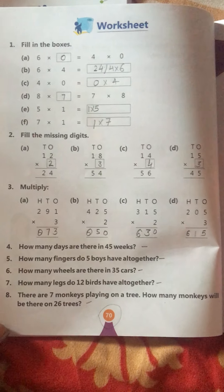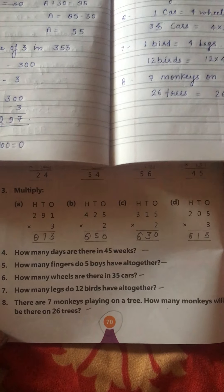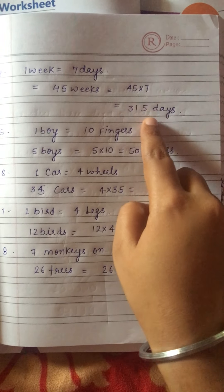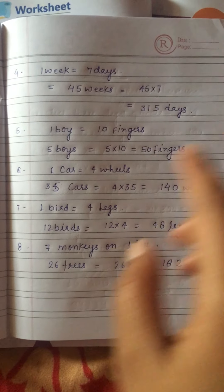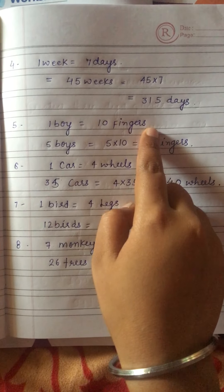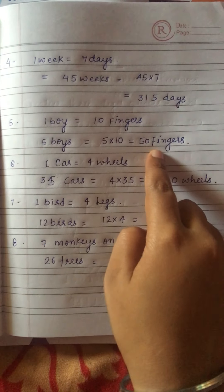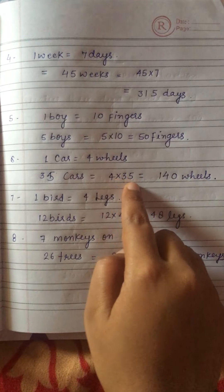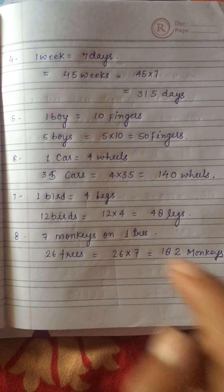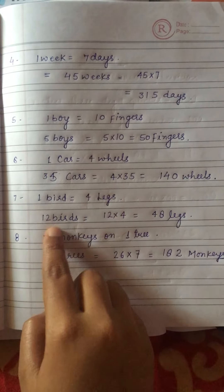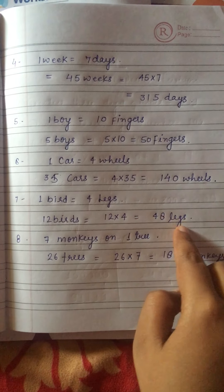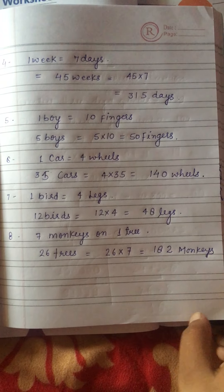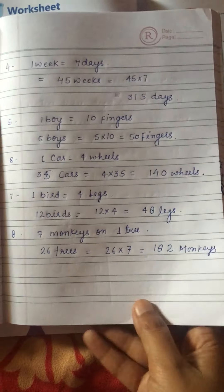Now let's look at word problems. How many days are there in 45 weeks? One week has 7 days, so 45 into 7. One boy has 10 fingers, so 5 boys have 5 into 10 equals 50 fingers. One car has 4 wheels, so 35 cars have 4 into 35 equals 140 wheels. One word has 4 legs; 12 words have 12 into 4 equals 48 legs. Seven monkeys on one tree; 26 trees have 26 into 7 equals 182 monkeys.